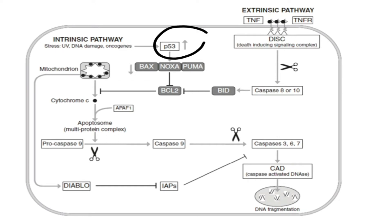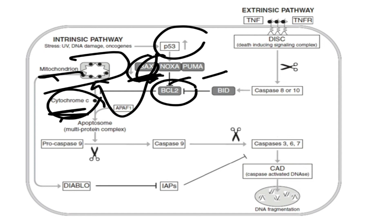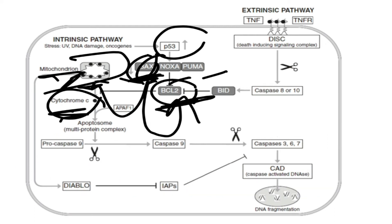Once P53 is activated, it activates proteins like Bax, Noxa, and PUMA. One of these proteins — let's say Bax — moves toward the mitochondria. Inside the mitochondria there is a protein called cytochrome C, which cannot leave the mitochondria into the cytoplasm because there is a guard called BCL2, localized to the outer membrane of the mitochondria, which prevents cytochrome C from leaving. Once Bax moves to the mitochondria, it interacts with BCL2 and inhibits it, leading to a change in the permeability of the mitochondrial membrane, which allows cytochrome C to move from the mitochondria into the cytoplasm.